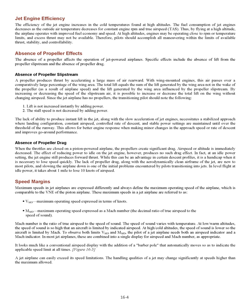Speed margins. Maximum speeds in jet airplanes define the maximum operating speed, comparable to VNE of the piston airplane. These are referred to as VMO — maximum operating speed in knots — and MMO — maximum operating speed expressed as a Mach number, the decimal ratio of true airspeed to the speed of sound. At low/warm altitudes, the aircraft is limited by indicated airspeed. At high/cold altitudes, the lower speed of sound means the aircraft is limited by Mach. To observe both VMO and MMO, pilots need both an airspeed indicator and a Mach indicator, usually combined into a single display with a barber pole indicating the applicable speed limit.